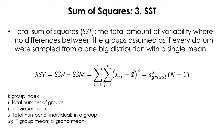If you add SSR plus SSM together, that gives you the total variance. The total sum of squares assumes no differences between groups — as if every datum were sampled from one big distribution with a single mean. You calculate SST by subtracting every score from the grand mean, squaring the deviance, and summing across all individuals across all groups.